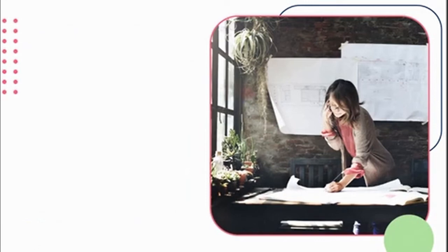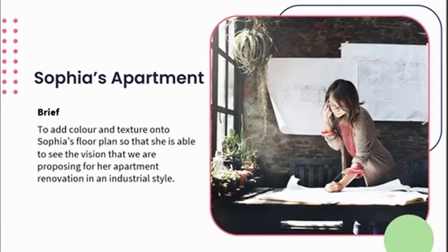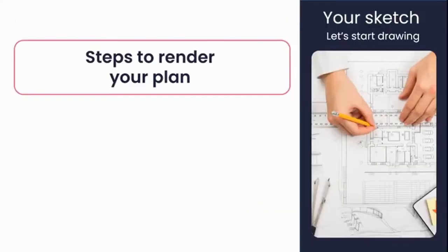We are now going to apply these textures to a plan to create beautifully rendered floor plans. Going back to Sophia's apartment from Lesson 6, we found that industrial style would best suit her renovation. Combined with the color scheme, we'll use the rendering techniques to render her floor plan. Our brief is to add color and texture onto Sophia's floor plan so she can see the vision, feeling, and function we are proposing. The style is industrial and the color scheme will be a neutral one. You can find the floor plan in your summary notes — print it off and get started.